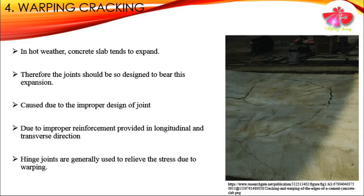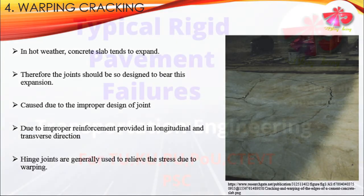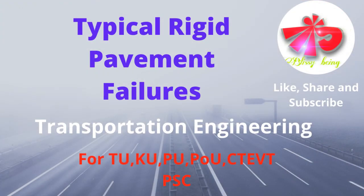The fourth type of failure pattern is the warping crack. Warping cracks occur in hot weather when the concrete slab tends to expand. Joints should be designed to bear this expansion, and whenever joints are not designed properly, they prevent the expansion of the concrete slab, resulting in excessive stress that causes warping cracking near the joint edge. Warping cracks may also occur due to improper reinforcement in the transverse and longitudinal directions. To relieve stress due to warping, hinge joints are generally provided.